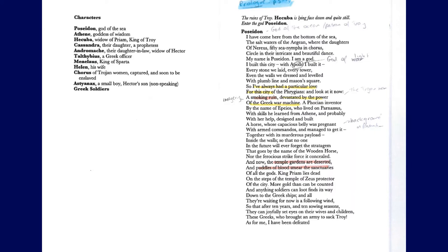'Virgins' is of course another way of saying Trojans. 'And look at it now — a smoking ruin, devastated by the power of the Greek war machine.' A couple of things to note here: the imagery of Troy being a smoking ruin, and the description of the Greek army as a 'Greek war machine.' There's a real lack of emotion here. We see some parallels already to the Athenian army of the time. 'A Phocian inventor — Phocis is a place in central Greece — by the name of Epius, who lived in Parnassus, with skills he learned from Athena, and probably with her help, designed and built a horse whose capacious belly was pregnant with armed commandos, and managed to get it together with its murderous payload inside the walls, so that no one in the future will ever forget the stratagem that goes by the name of the Wooden Horse, nor the ferocious strike force it concealed.'